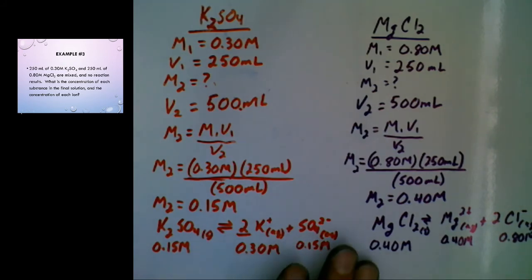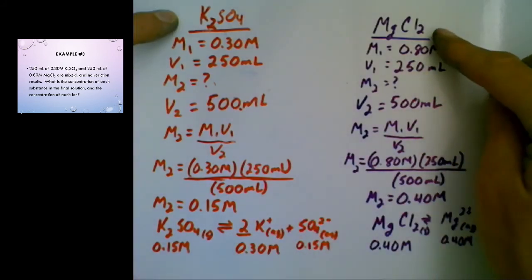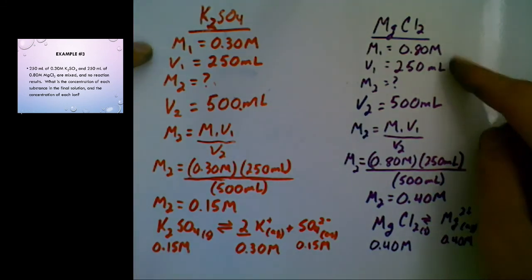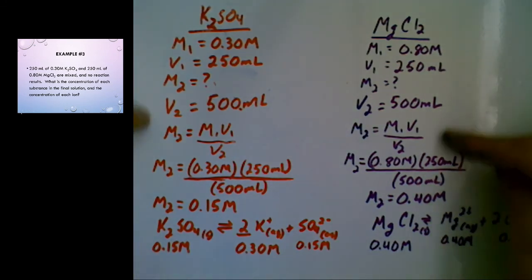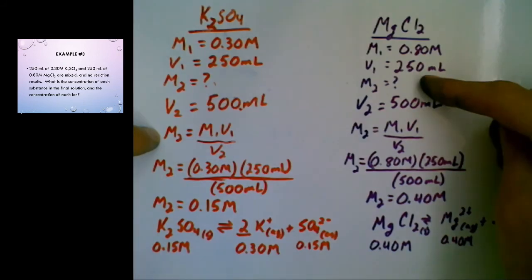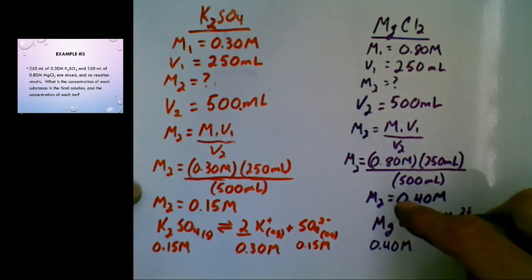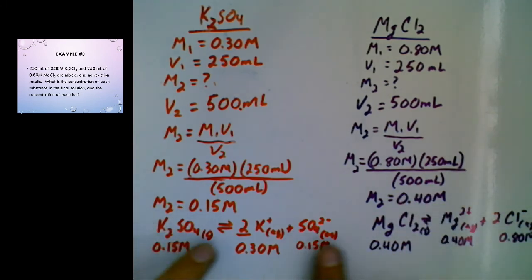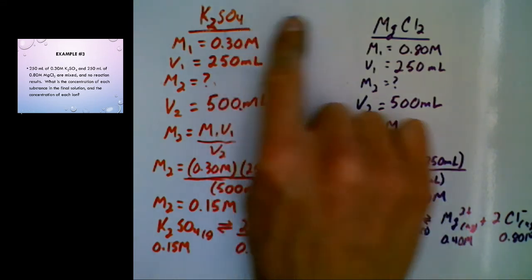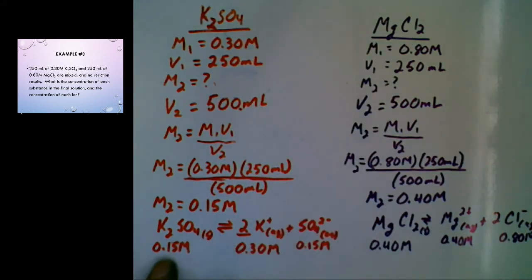So when it comes to doing these types of problems, if you end up mixing without a reaction, sort out your substances and your M1, V1, M2, V2. Figure out what it is you need to solve, which is going to be your concentration after mixing. Solve it. Look at the ratios within your dissociation equation for each substance. Calculate the concentrations of each ion.